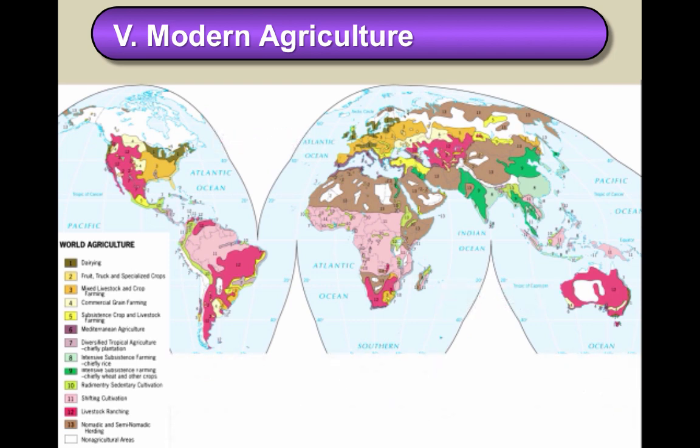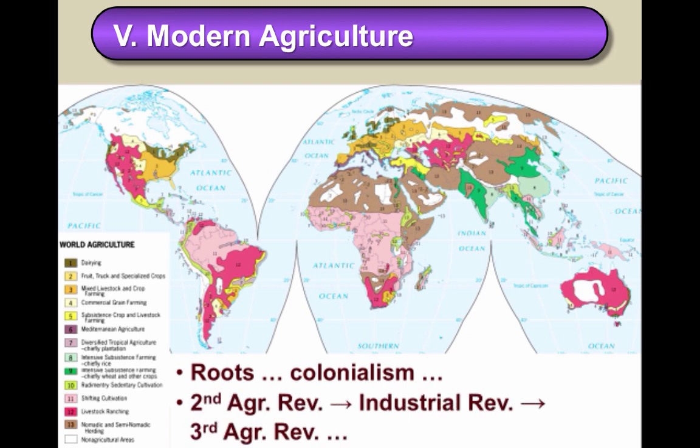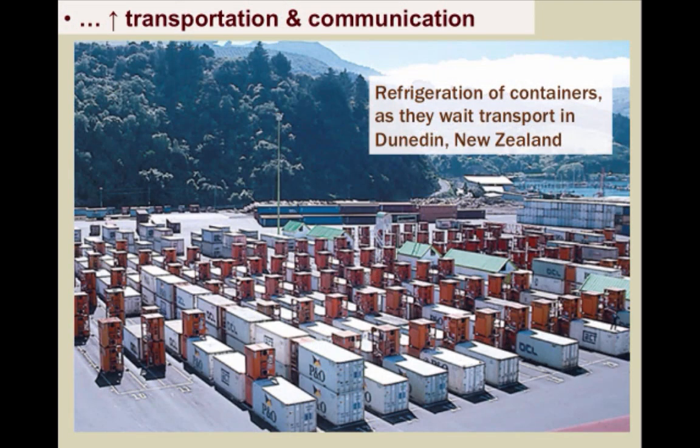The roots of modern commercial agriculture can be traced to colonization by Europe, beginning in small part in the 16th century, but more so because of European colonization in the 18th and 19th centuries. The Second Agricultural Revolution led into the Industrial Revolution, which in turn led us into the Third Agricultural Revolution. The world today is connected as never before due to modern technologies in transportation and communication.